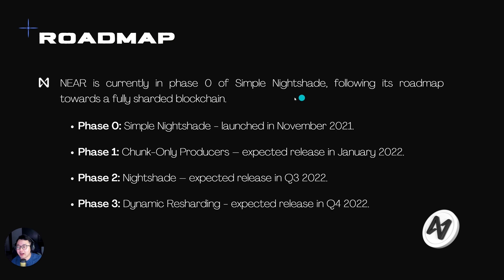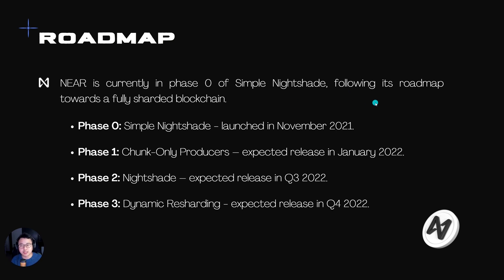In terms of the Nightshade mechanism, there are actually a few different phases. We are currently in phase 0, with phases 1, 2, and 3 coming soon, and the whole thing is expected to be finished by the end of 2022. The dynamic resharding approach allows it to be more decentralized, because expensive hardware requirements would make it harder for everyone to participate. If you're interested, we'll put a link down in the description below.